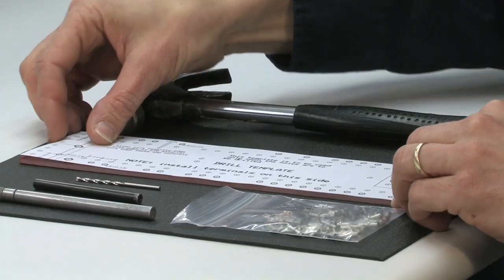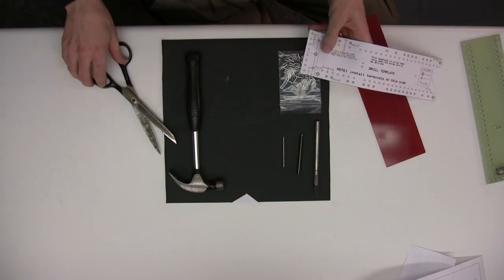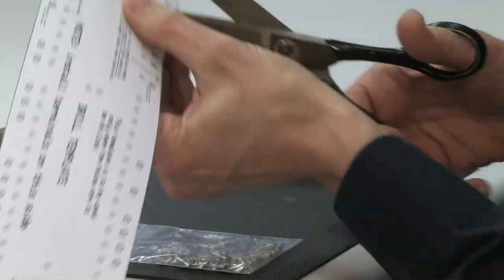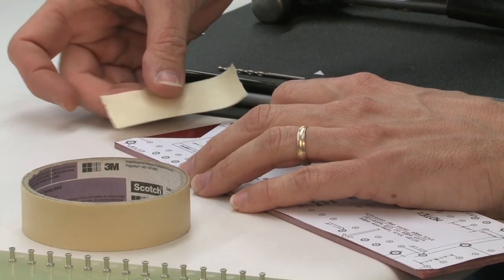This template fits the turret board. I'm going to cut little corners off the edges. This will give me some room to tape the corners on. You want to line it up.